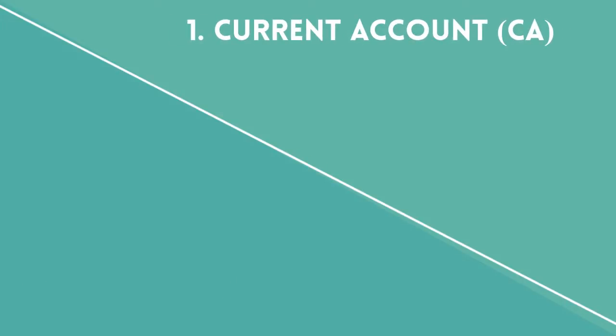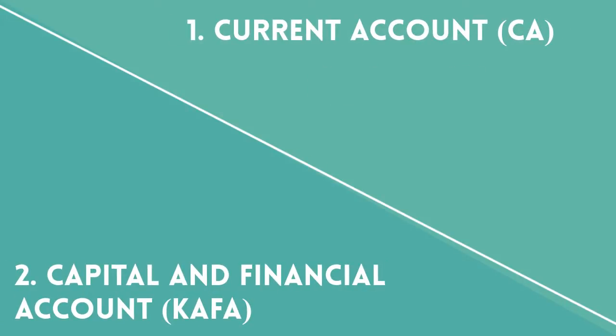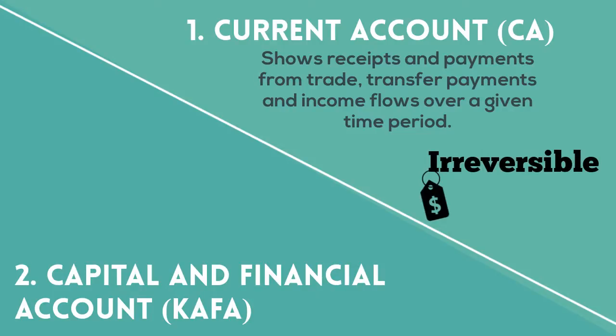The balance of payments can be divided into two accounts: the current account and the capital and financial account. The current account shows receipts and payments from trade, transfer payments and income flows over a given time period, and these transactions are irreversible.